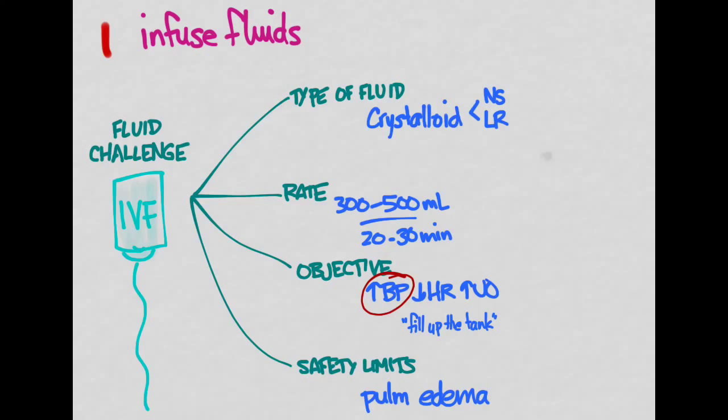The four things are: the type of fluid, the rate that you give the fluid, your objective or what you're aiming for, and when you want to stop because things are getting dangerous, the safety limits. What type of fluid do you need to give? Crystalloid is your go-to fluid, meaning either normal saline or lactated ringers. In rare cases you might want to give albumin, but for the most part you're going to give crystalloid.